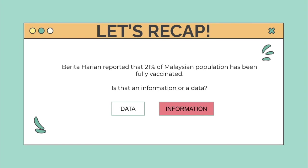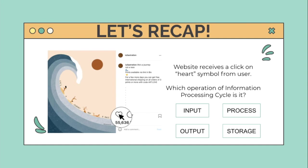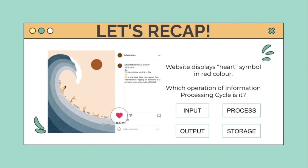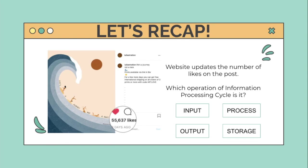Correct, that is information. Next, we have an Instagram post. A website receives a click on the heart symbol from a user — which operation of the information processing cycle is it? Receiving a click would be input. Next, the website records the number of likes of the post — that would be storage. The website displays the heart symbol in red color — that would be output. The website updates the number of likes on the post — that would be process.